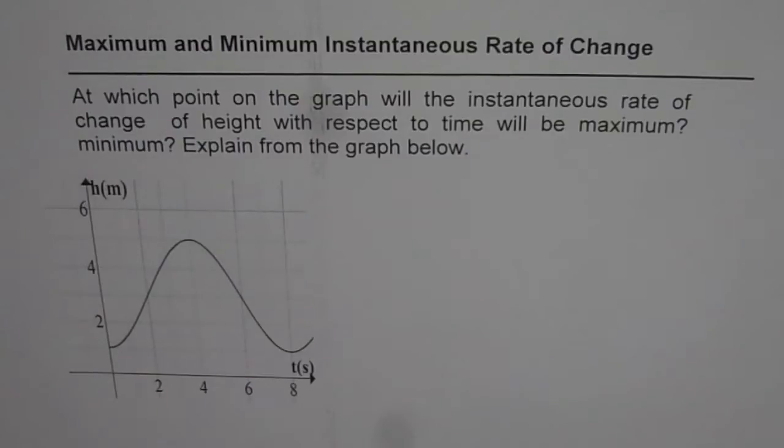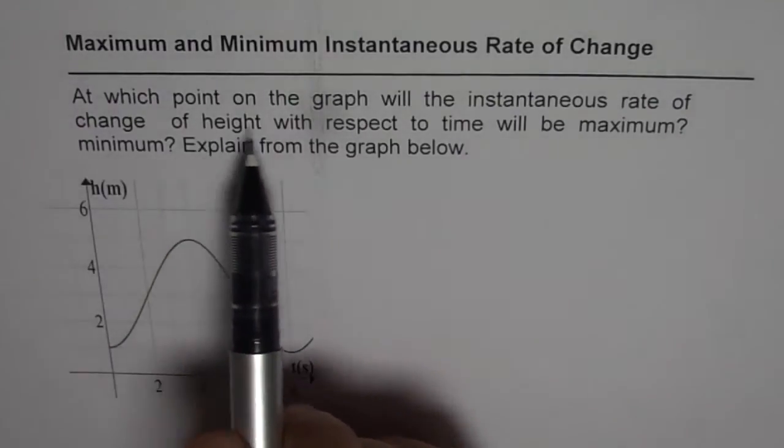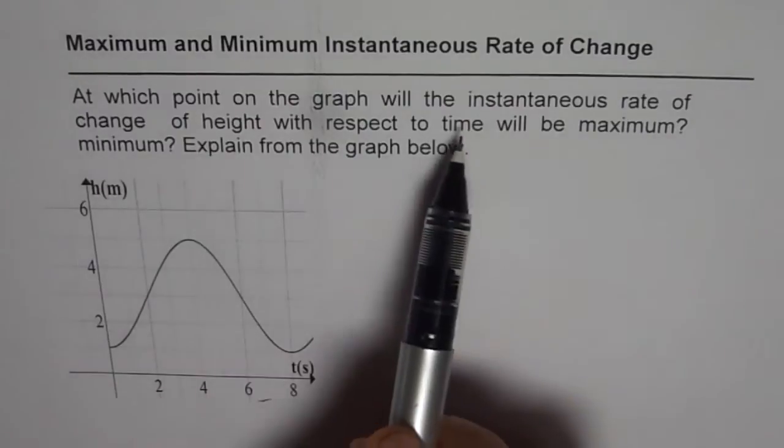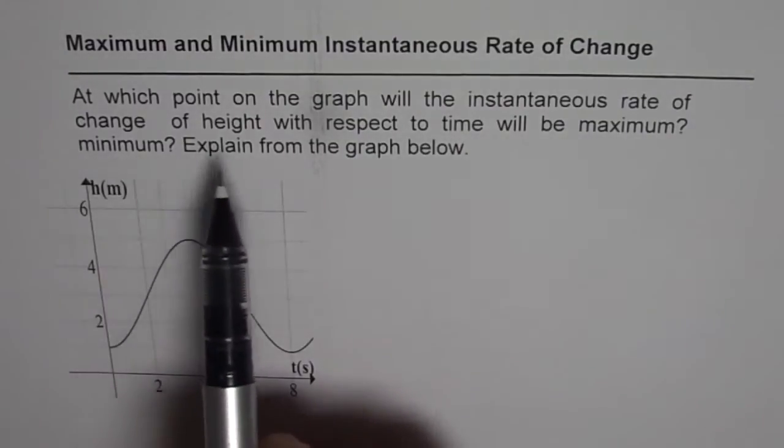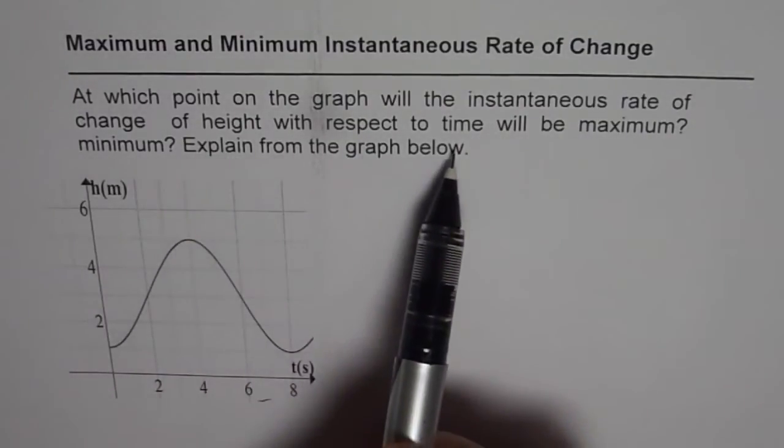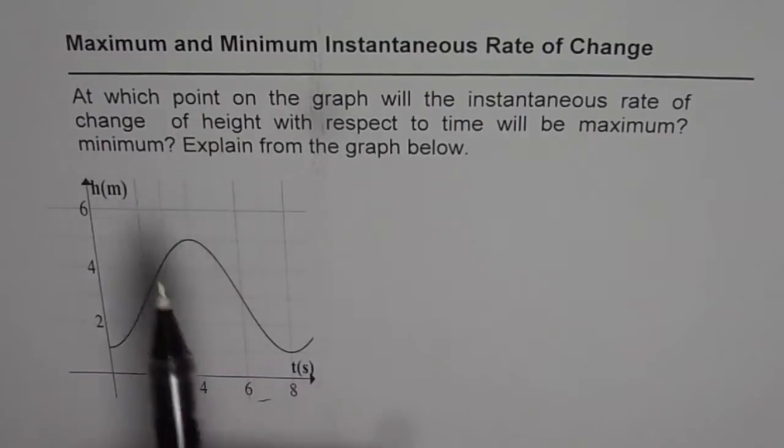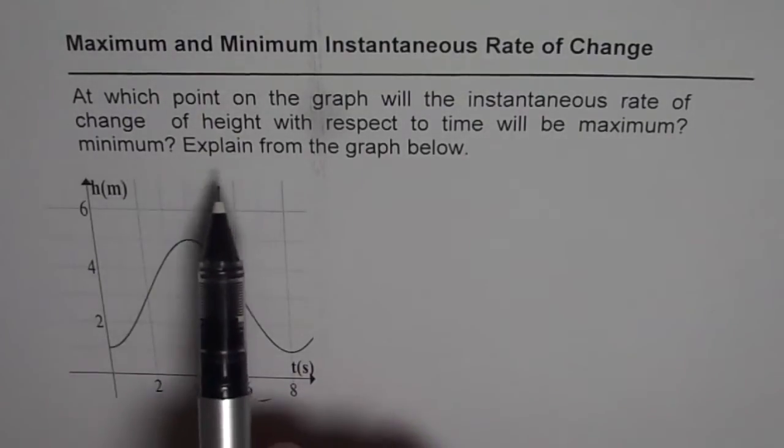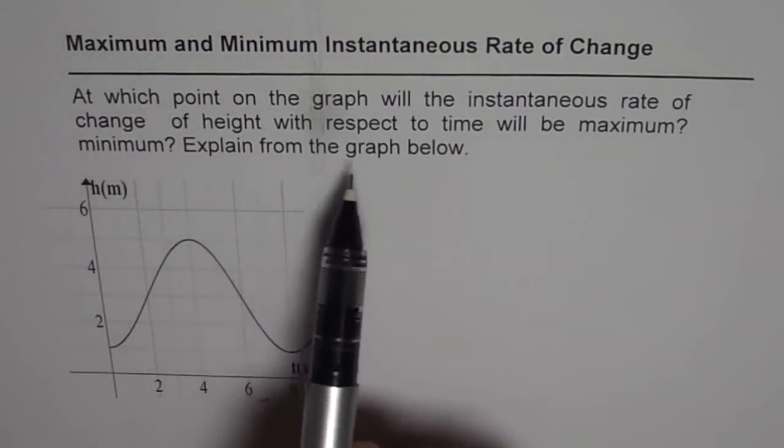So basically it is modeling and rate of change. In this particular video, we have the same graph, a cosine function which is reflected and so it starts with the minimum, goes to maximum, then comes down. The question here is, at which point on the graph will the instantaneous rate of change of height with respect to time be maximum or minimum and explain from the graph below.